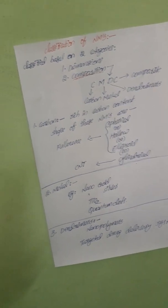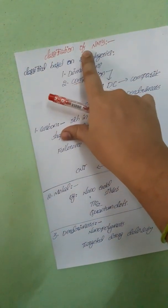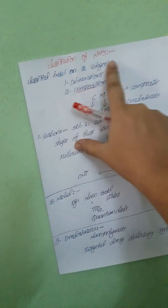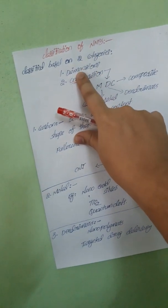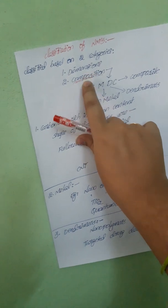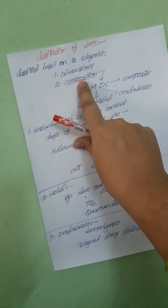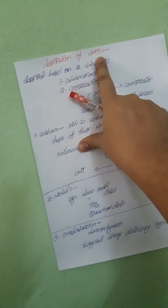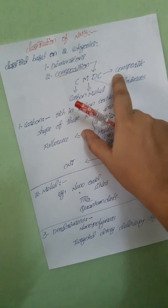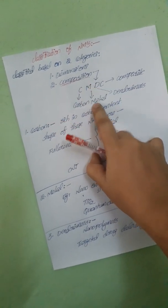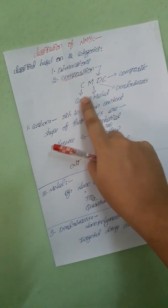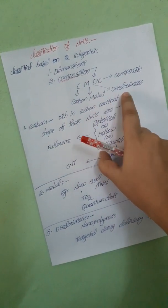Hello students, today I am going to discuss the classification of nanomaterials. Nanomaterials are classified based on two categories: dimensions and composition. Today I am going to discuss classification based on composition. Based on composition, nanomaterials are classified into four types: C, M, D, C — Carbon, Metal, Dendrimers, and Composite.